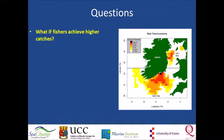The first question asks how the system responds if fishers achieve higher catches than anticipated. This could arise, for example, if all fishers go to the red areas — the areas where they know their target species is abundant — or if fishers achieve higher catchability or efficiency, because they are no longer constrained by any catch or landings quota.